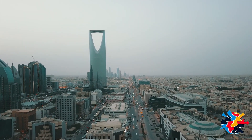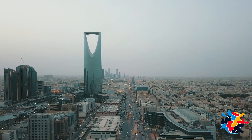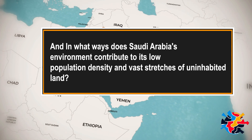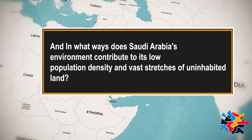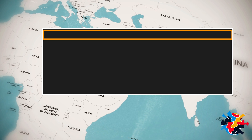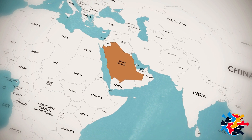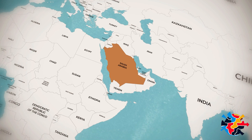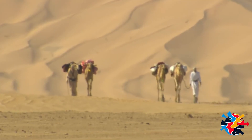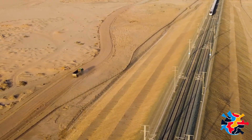So what are the primary reasons why Saudi Arabia is so sparsely populated? And in what ways does Saudi Arabia's environment contribute to its low population density and vast stretches of uninhabited land? One big reason is that a significant portion of the country is covered by desert. Saudi Arabia is considered 95% desert land, which can make it difficult to build infrastructure and access resources.